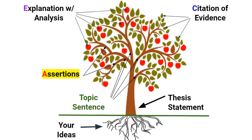As you can see, the assertions are the main branches of the tree. You have your ideas — they're the roots. Your thesis statement is the trunk. The topic sentence is the main limbs. And your assertions are the branches that sprout off of those main limbs.